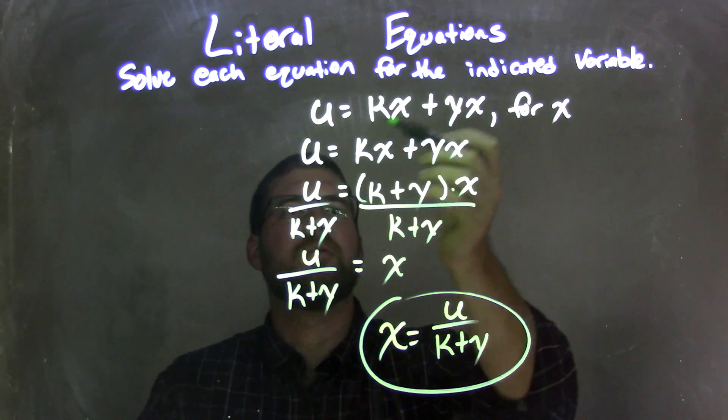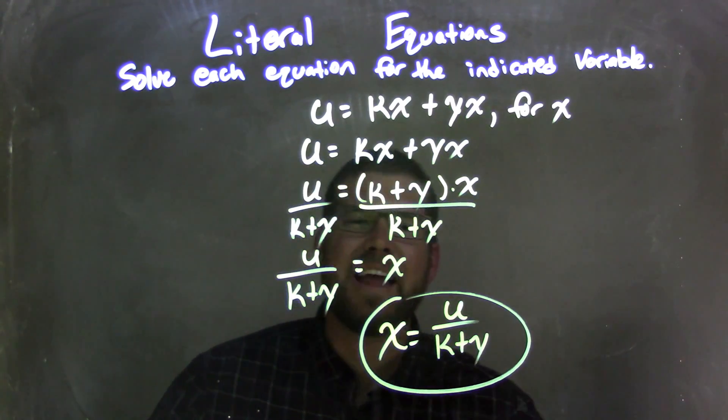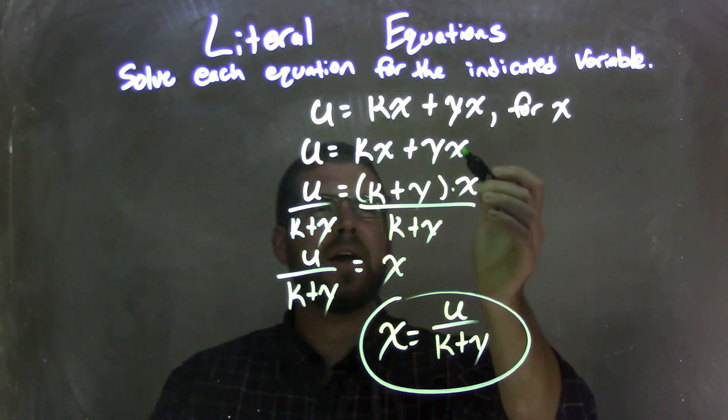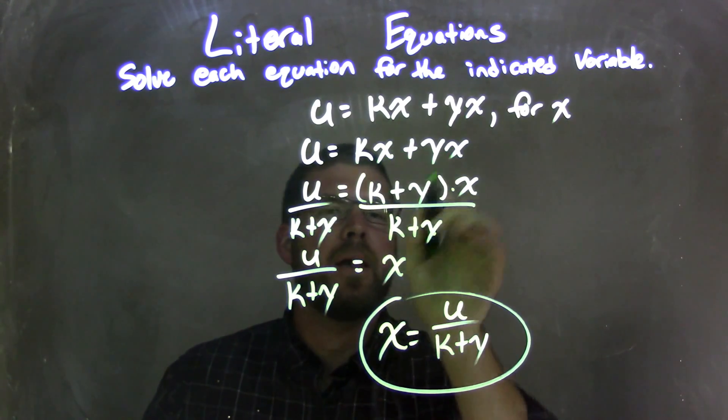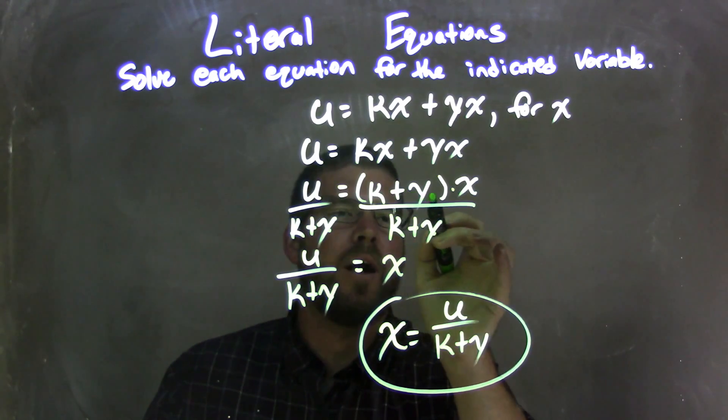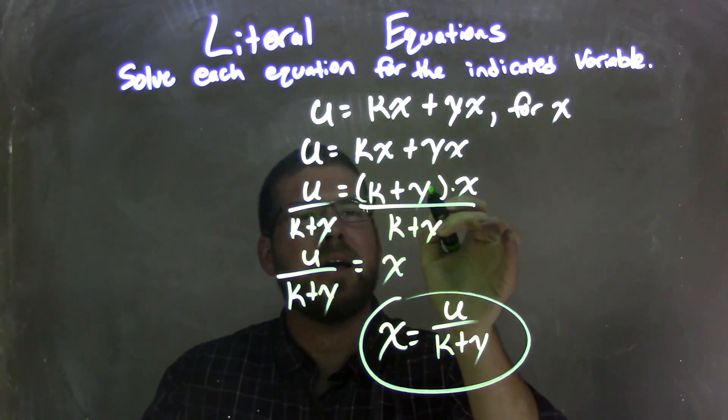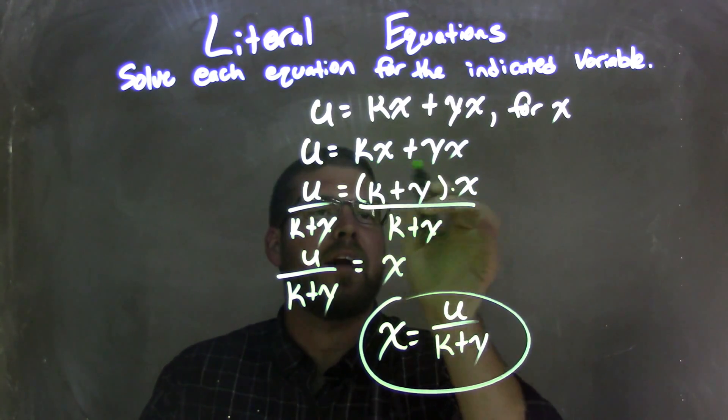To recap, u equals kx plus yx and we're solving for x. I rewrite my equation and then pull out an x from both parts. That leaves me with k plus y, and if I distribute the x back in, I would get kx plus yx.